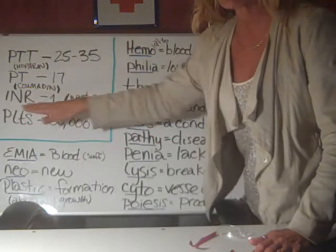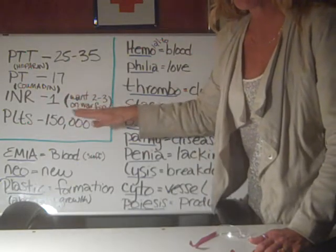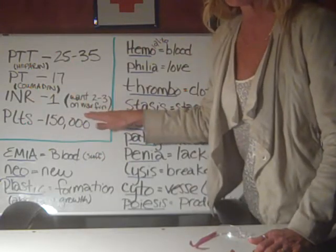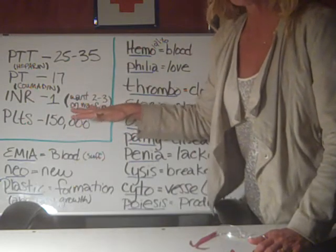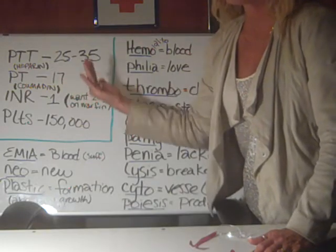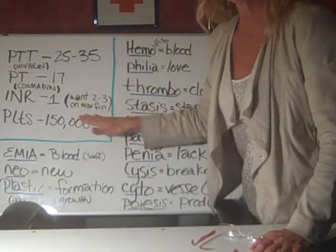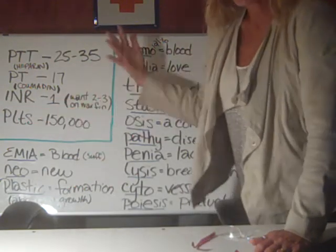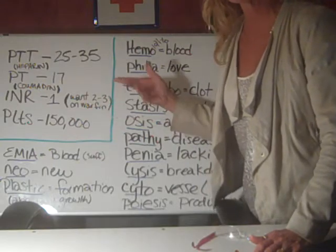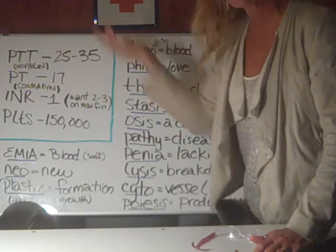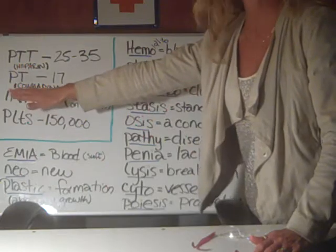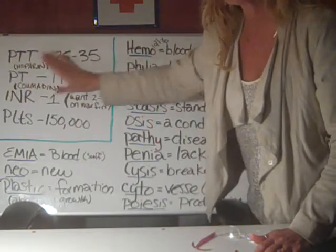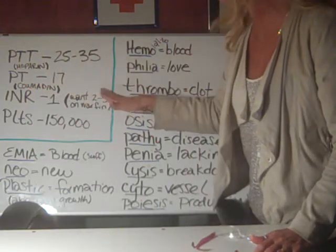Any patient going home on warfarin or Coumadin needs to have these numbers checked fairly frequently — anywhere from every two to every six months — because if nobody checks and the INR goes way up, and the patient falls and bumps their head, they're going to bleed out because their Coumadin levels are too high. That's why these numbers are important to follow.